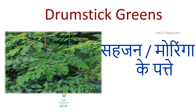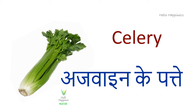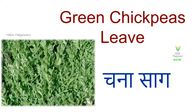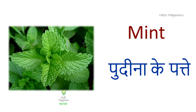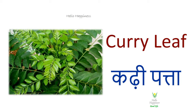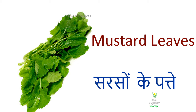Drumstick greens — Sahajan ya moringa ke patte. Suarli — Ajwain ke patte. Green chickpea leaves — Chana saag. Red amaranth leaves — Lal chaulai ya rajgira ke patte. Mint — Pudina ke patte. Curry leaf — Kadi patta.